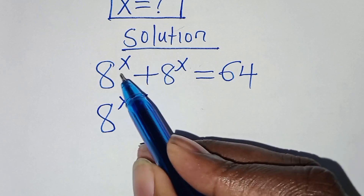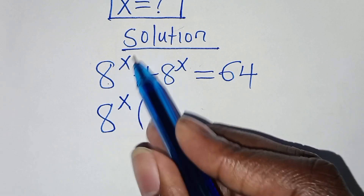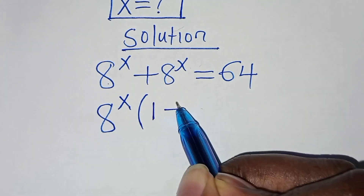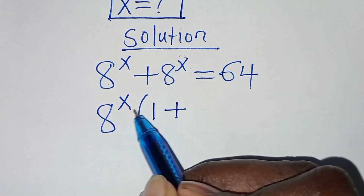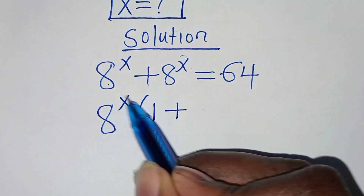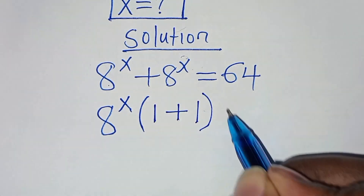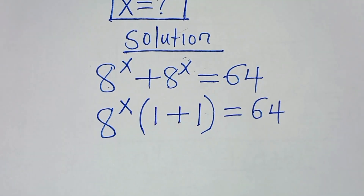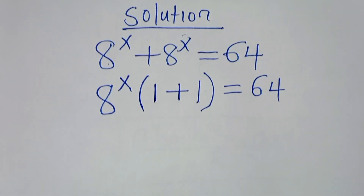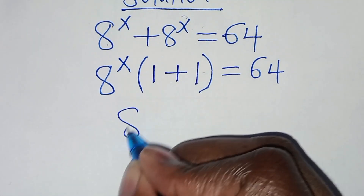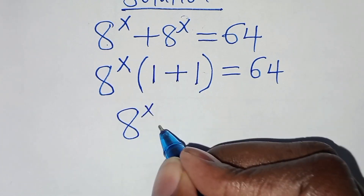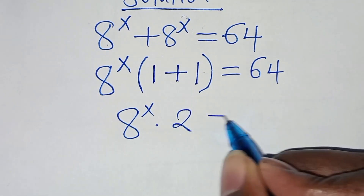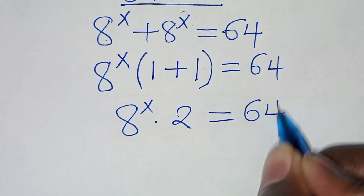We have 8 to the power of x, so that 8 to the power of x divided by 8 to the power of x is 1, plus 8 to the power of x divided by 8 to the power of x is 1, this is equal to 64. So this implies we have 8 to the power of x times 1 plus 1, this is 2, and this is equal to 64.